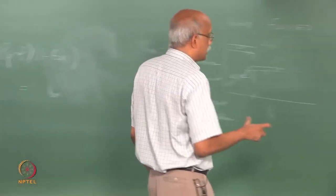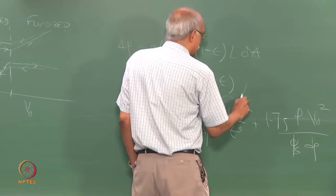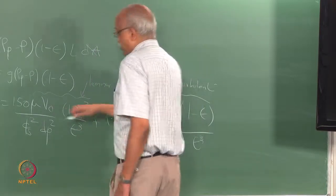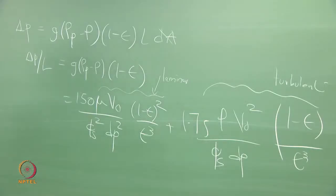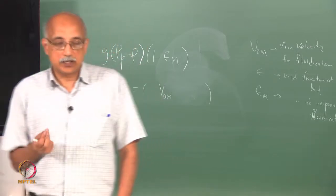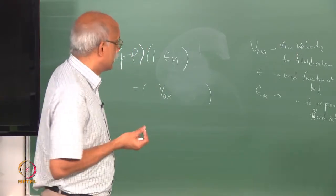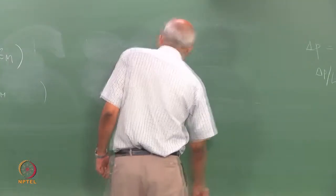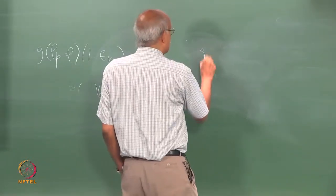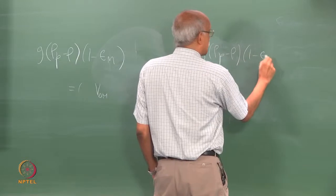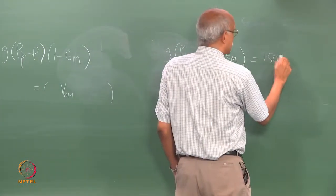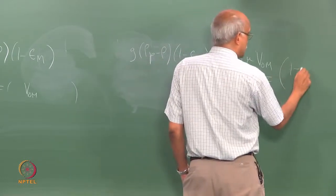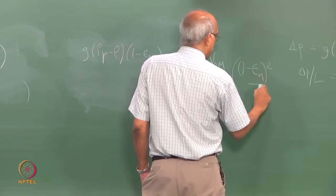The two terms in the Ergun equation represent two different Reynolds number conditions: the first term is for laminar or low Reynolds number conditions, and the second is for turbulent or high Reynolds number conditions. Fluidization of very fine particles is typically a low Reynolds number condition. For fine particles you can calculate the minimum fluidization velocity using only the first term, giving: g times (rho_p minus rho) times (1 minus epsilon_m) equals 150 times mu times V0-m over phi_s squared times dP squared times (1 minus epsilon_m) squared over epsilon_m cubed.